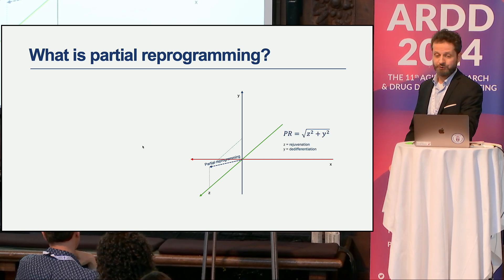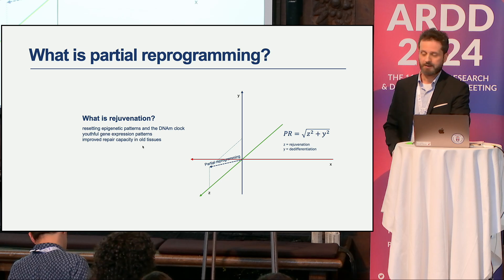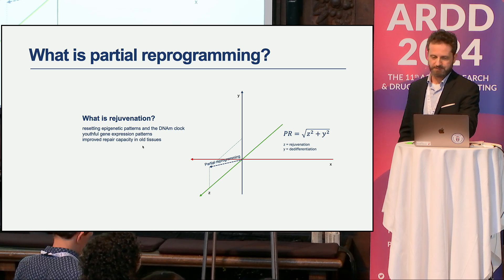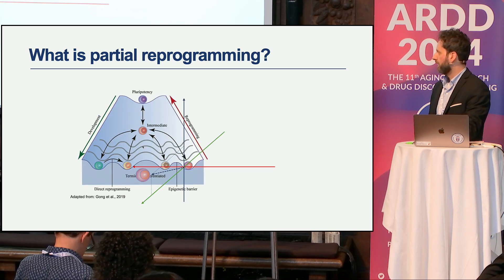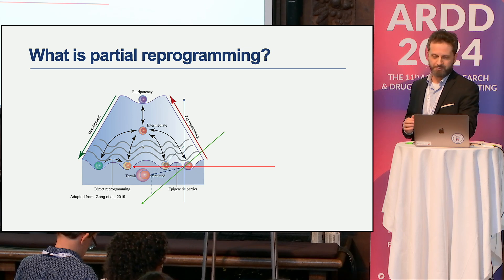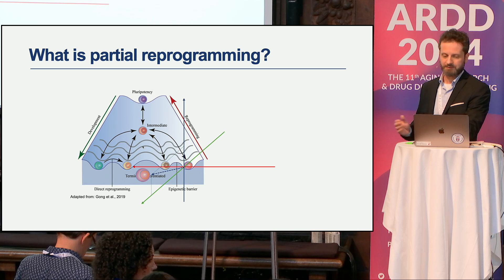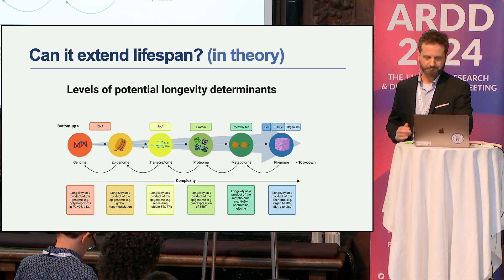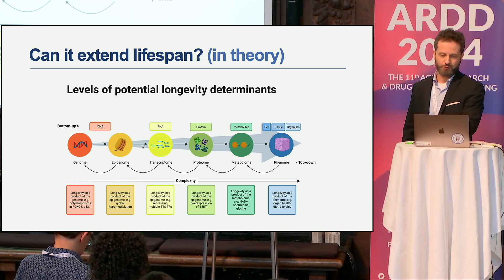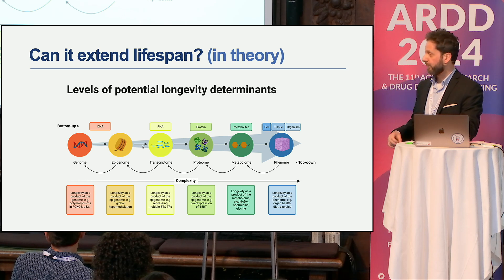Rejuvenation, for the purposes of this talk, is defined as resetting epigenetic patterns and the DNA methylation clock, as well as restoring youthful gene expression patterns. Overlaying these axes, a partially reprogrammed cell at the bottom right comes toward us, having retained its cell identity without dedifferentiating—it was simply rejuvenated. In theory, this can affect lifespan because we are affecting the epigenome from the bottom up, and we assume that propagates through the transcriptome and proteome all the way to the phenome.